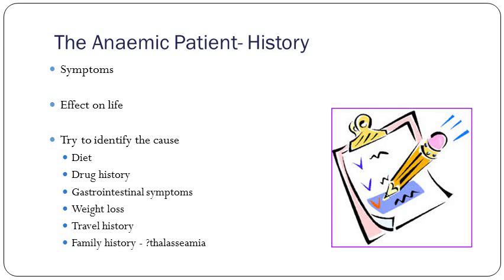If presented with an anemic patient, key things to ask in the history: symptoms, the effect on their life — that quantifies severity and whether treatment needs to be started urgently. Then try to identify the cause: diet, drug history, any GI symptoms such as melena, PR bleed, unexplained weight loss, recent travel history, and family history — particularly any thalassemia that could explain a chronic background of anemia.